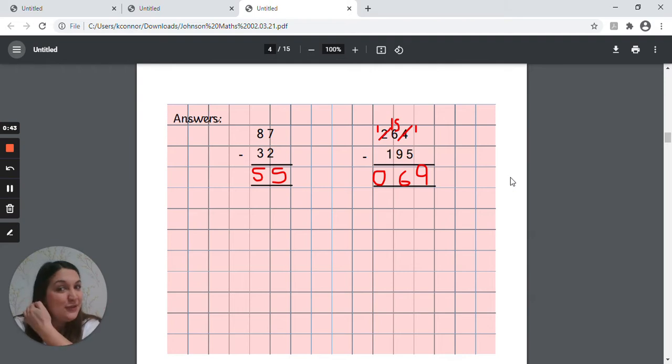Okay, so the answers are on screen for you now. So the first one, 87 take away 32, was quite straightforward really. You didn't have to do any exchanging, so seven take away two left you with five and eight take away three left you with five.